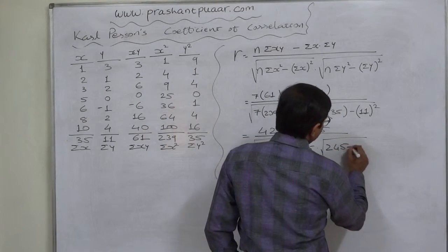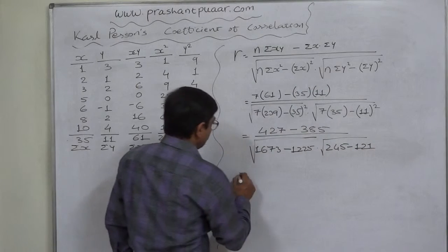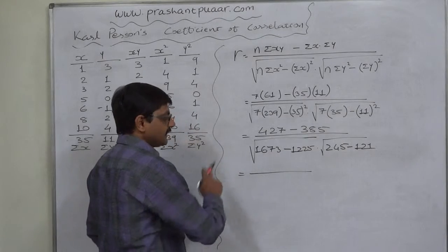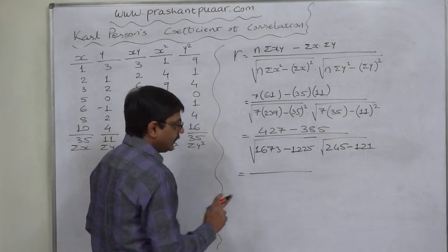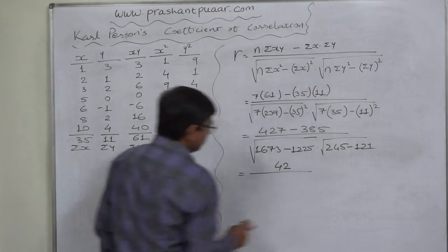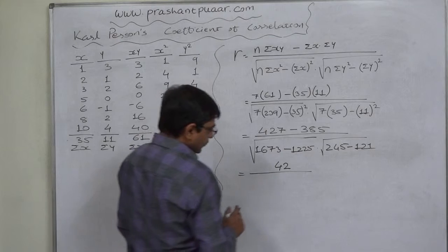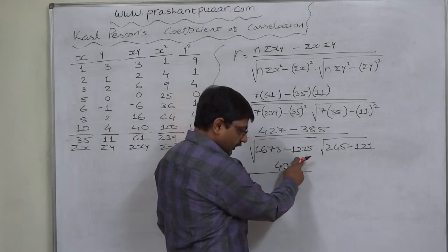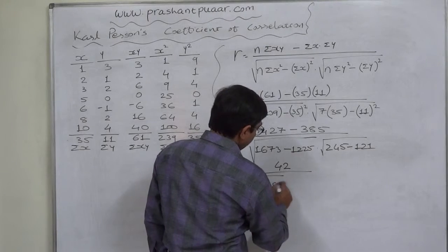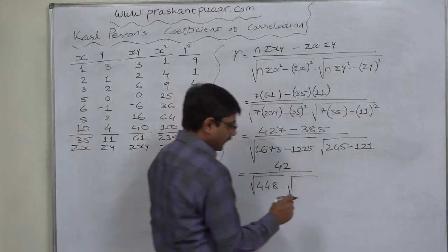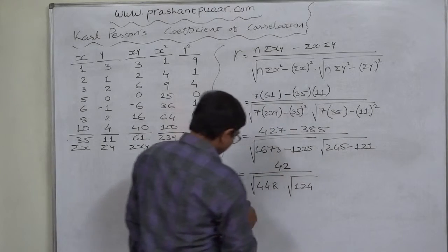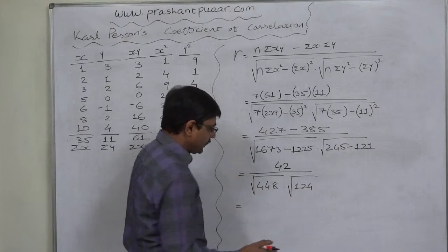Next step of simplification: 427 minus 385 comes to 42. Under root, 1673 minus 1225 comes to 448, into under root 245 minus 121, which comes to 124.